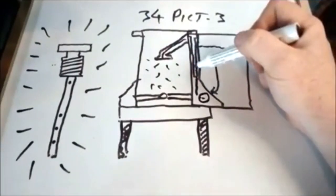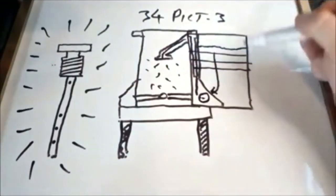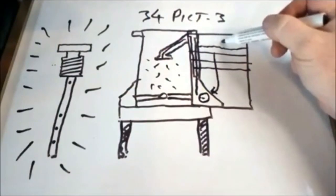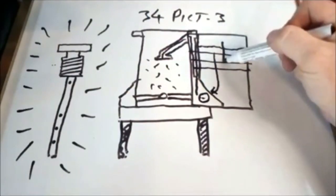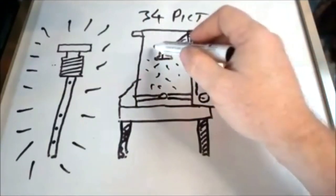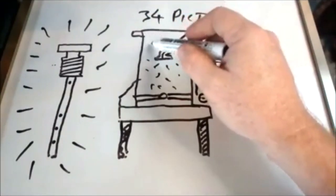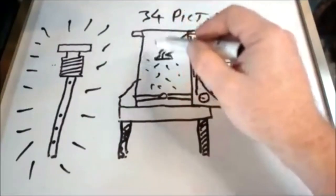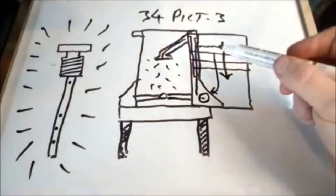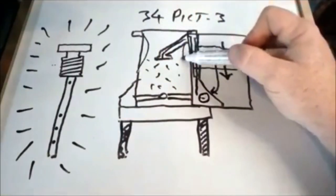What the emulsion tube does is it has a series of holes at certain levels. And what happens is as your fuel level decreases in the bowl, as the demand for fuel is higher because of the vacuum or the amount of CFM that passes over and through the venturi...